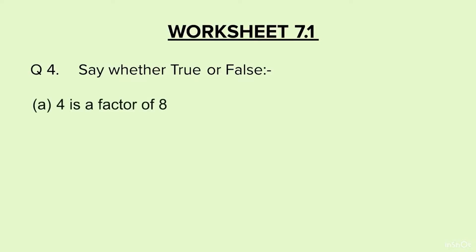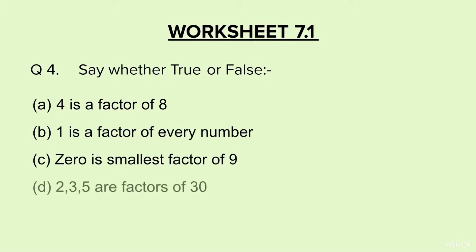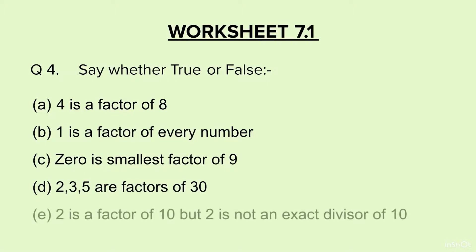Question 4: Say whether true or false. A: 4 is a factor of 8. B: 1 is a factor of every number. C: 0 is the smallest factor of 9. D: 2, 3, 5 are factors of 30. E: 2 is a factor of 10 but 2 is not an exact divisor of 10.